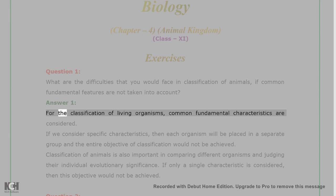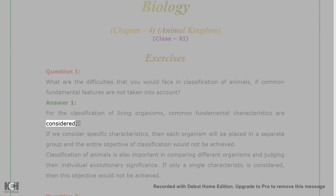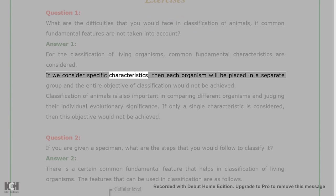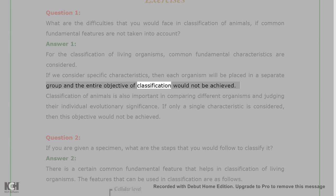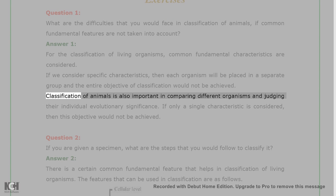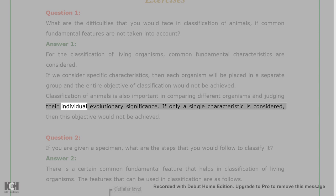Answer 1: For the classification of living organisms, common fundamental characteristics are considered. If we consider specific characteristics, then each organism will be placed in a separate group and the entire objective of classification would not be achieved. Classification of animals is also important in comparing different organisms and judging their individual evolutionary significance.